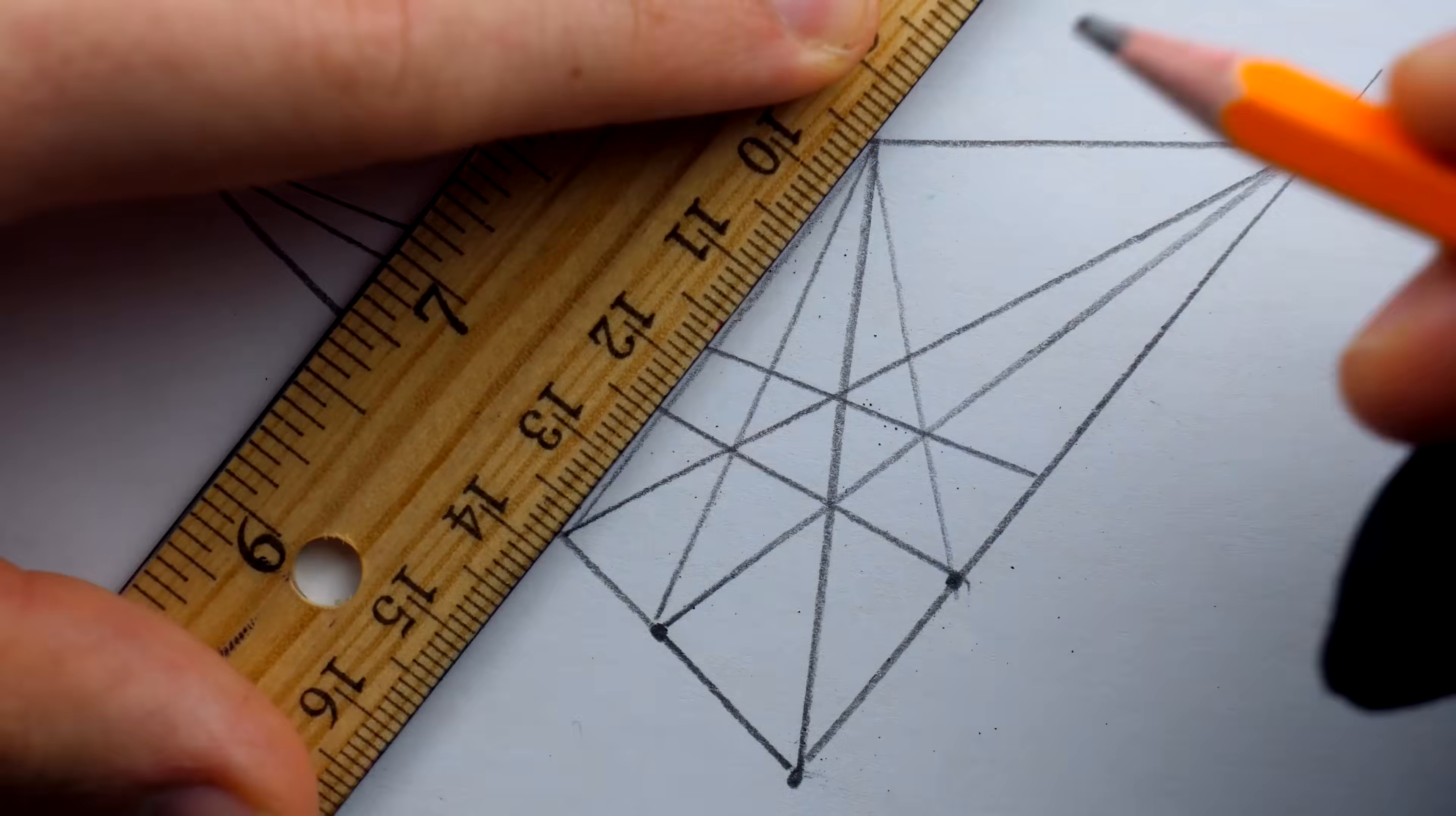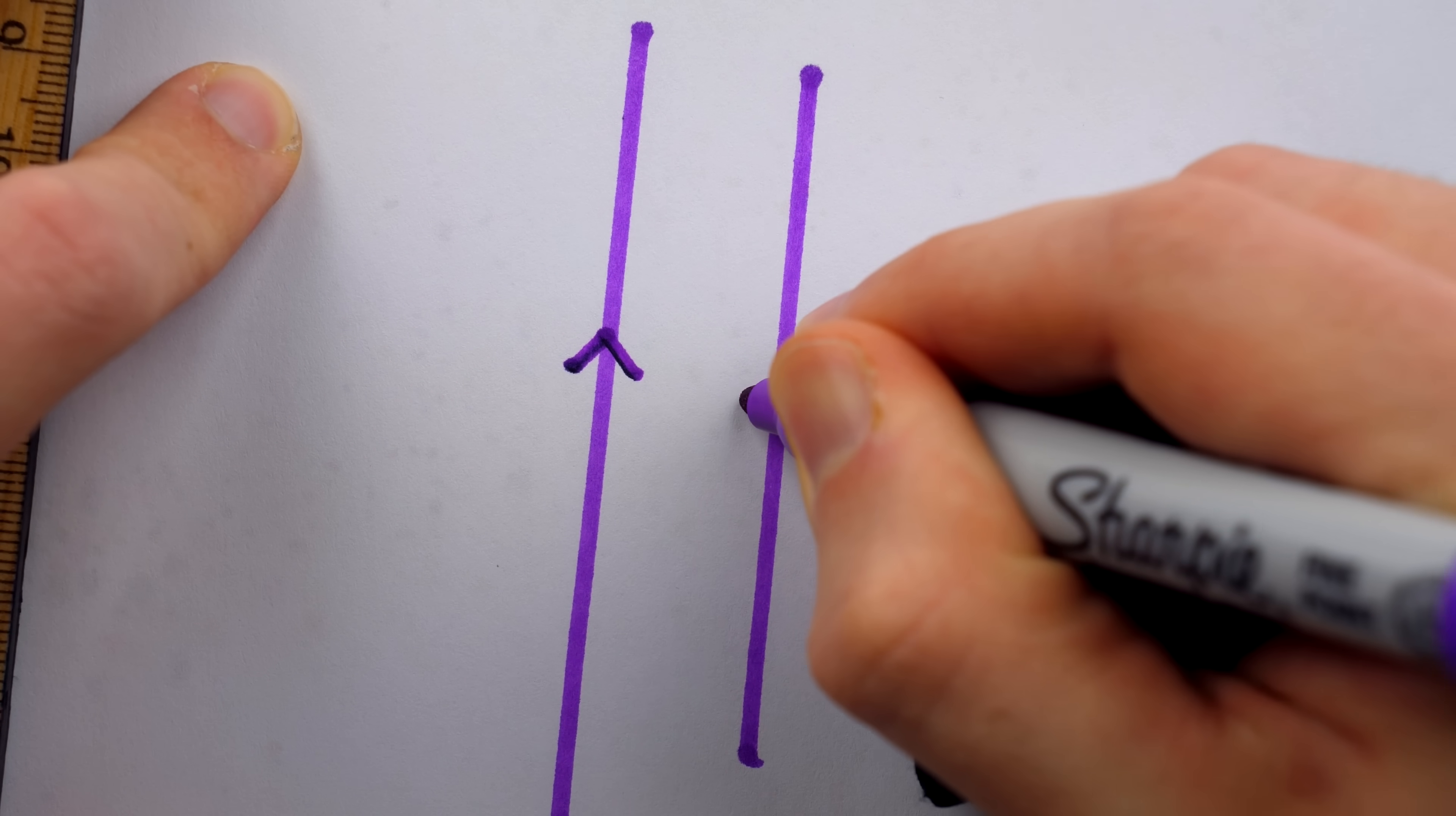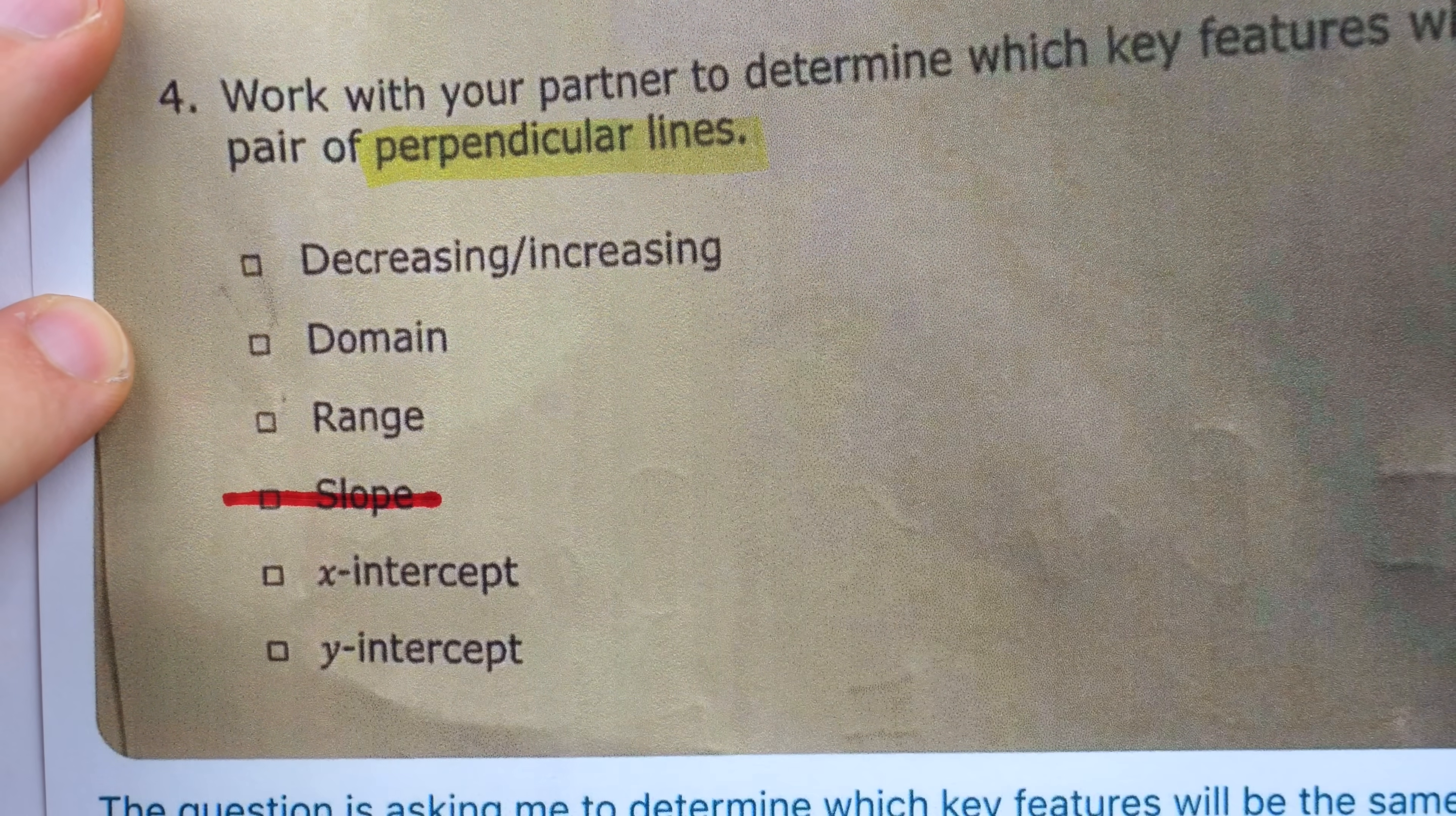Lines with the same slope are what we in the business call parallel. They look like this if you look at them in real life upon a tiled floor. But within the warm and familiar embrace of the Euclidean plane, parallel lines look like that. Parallel lines have the same slope, not perpendicular ones. So this is not one of the key features which will be the same for any pair of perpendicular lines. We'll just go ahead and eliminate slope.